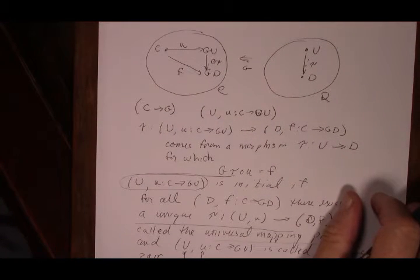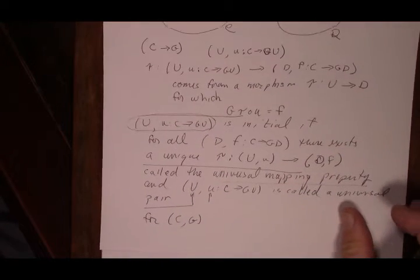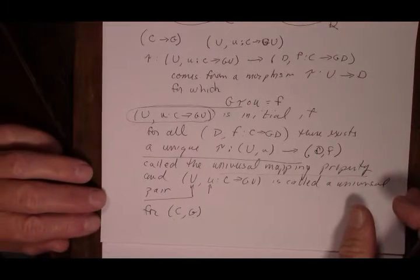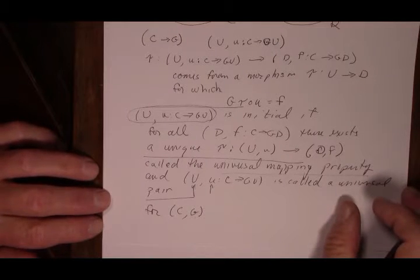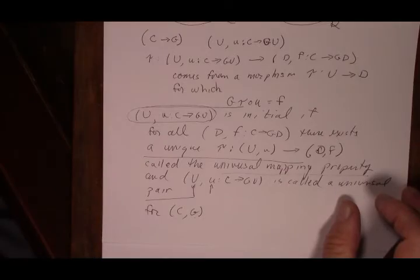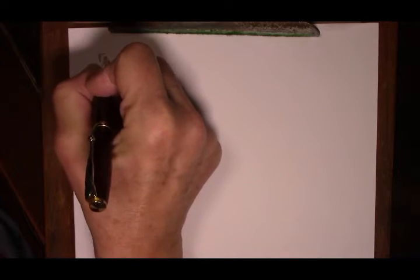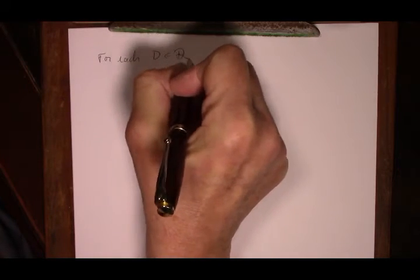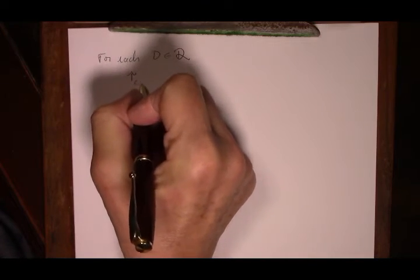So what we have seen is that the concept of a universal pair and the universal mapping property is equivalent to — is the same as — the concept of an initial object in this comma category C arrow G. For each D in the category D, we can define a map tau_CD.